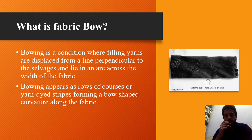Now, what is fabric bow? It is defined as the greatest distance measured parallel to the selvages between a filling or course yarn, stripe, or dominant line and a straight line perpendicular to the edges. Bowing is a condition where filling yarns are displaced from a line perpendicular to the selvages and line an arc across the width of the fabric.